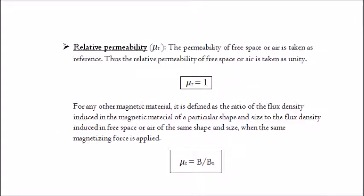B. Relative permeability, μᵣ. The permeability of free space or air is taken as reference, thus the relative permeability of free space or air is taken as unity; therefore μᵣ equals 1. For any other magnetic material, it is defined as the ratio of the flux density induced in the magnetic material of a particular shape and size, to the flux density induced in free space or air of the same shape and size, when the same magnetizing force is applied. It is given by: μᵣ equals B divided by B₀.